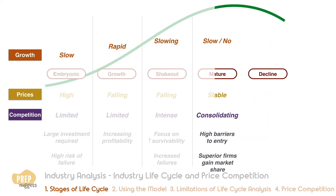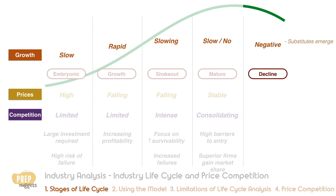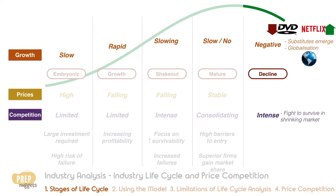The final stage is the decline stage, where demand growth turns negative. Very often this is due to technological substitution — for example, the video rentals industry has been declining for years as consumers turn to streaming networks like Netflix. Globalization also plays a role as manufacturing industries in developed nations decline when retailers turn to low-cost manufacturers from emerging markets. Competition is intense as firms battle to survive in a shrinking market, and excess capacity leads to price cuts and price wars.